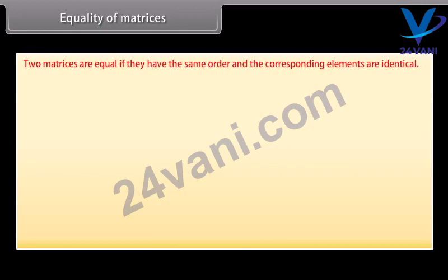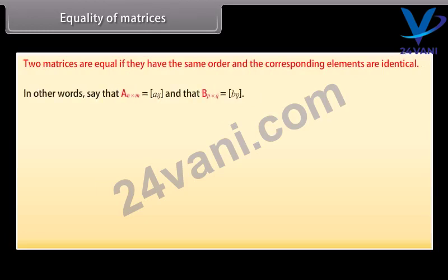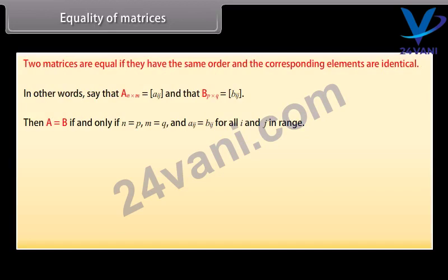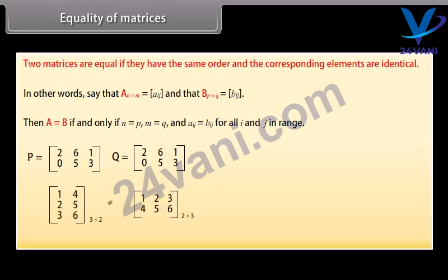Equality of matrices. Two matrices are equal if they have the same order and the corresponding elements are identical. In other words, say that A (n by m) equals [a_ij] and B (p by q) equals [b_ij]. Then A equals B if and only if n equals p, m equals q, and a_ij equals b_ij for all i and j in range. Here are two matrices which are not equal even though they have the same elements.